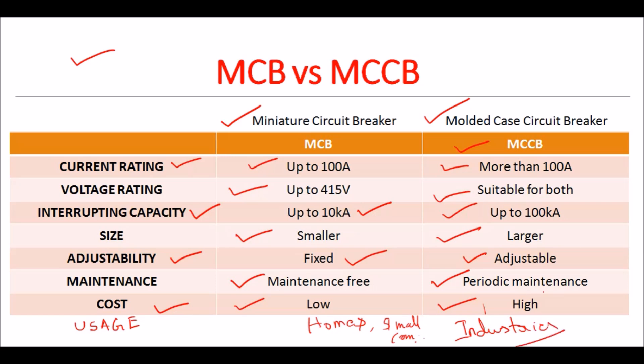In summary, choosing between MCB and MCCB depends on the specific requirements of the electrical system, including current and voltage levels, the need for adjustability, and application scale. MCB is suitable for lower capacity, fixed settings, and smaller scale applications like homes and small buildings. MCCBs are designed for higher capacity, adjustable settings, and large scale applications like industrial plants and large commercial buildings.